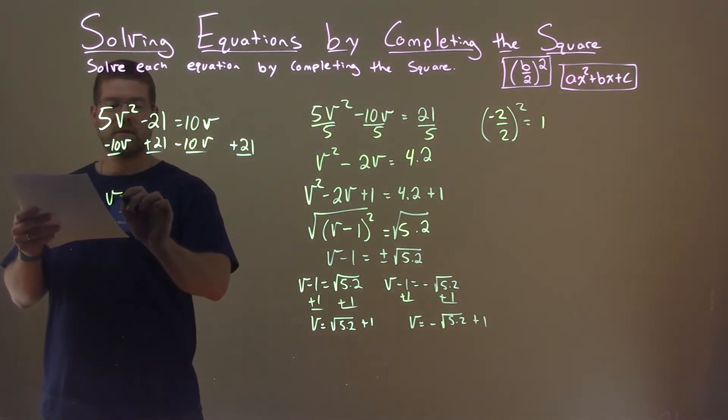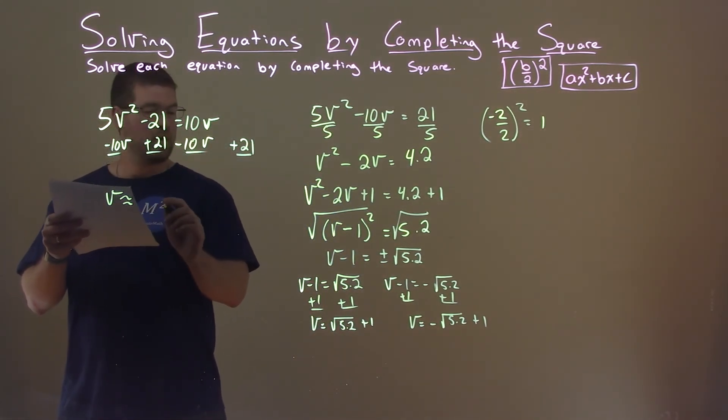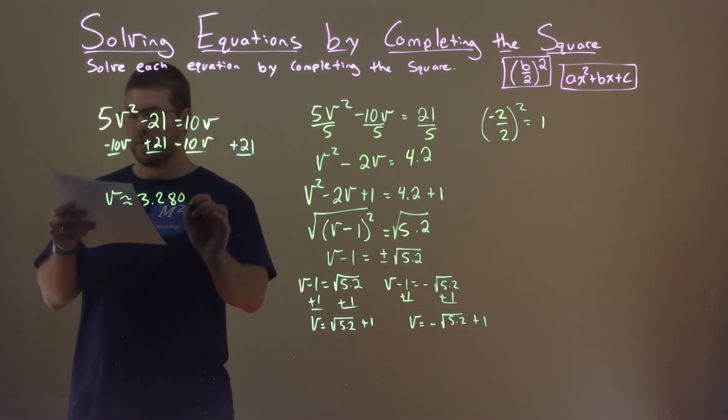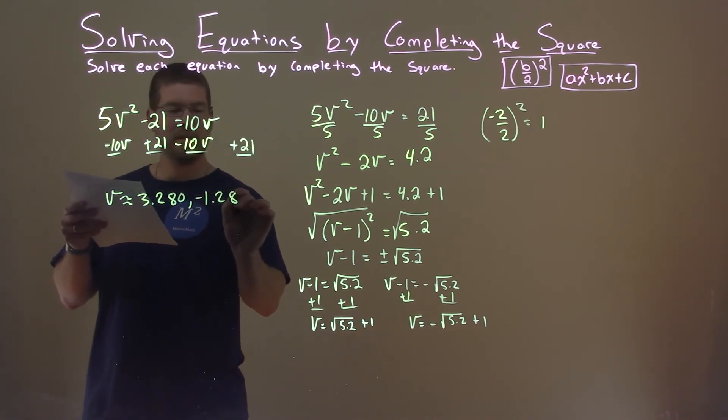So these two numbers, as a decimal, are 3.280 rounded, and negative 1.280.